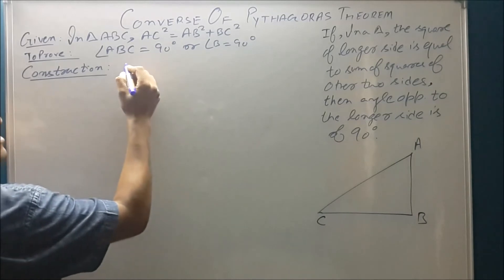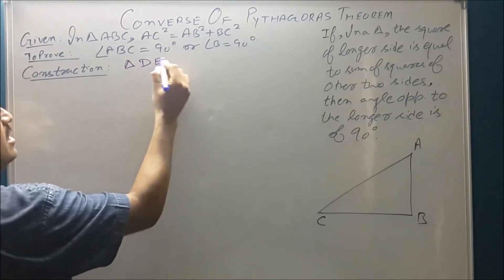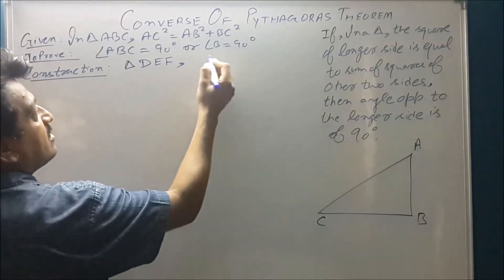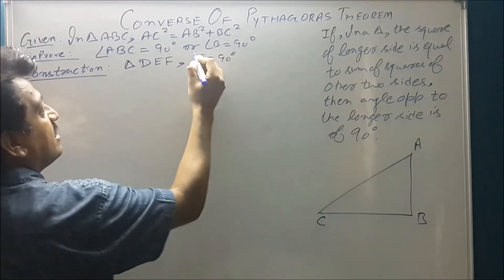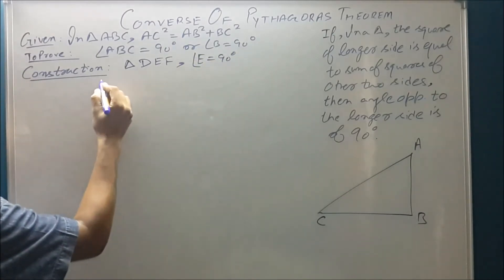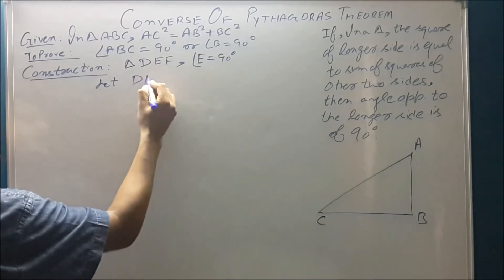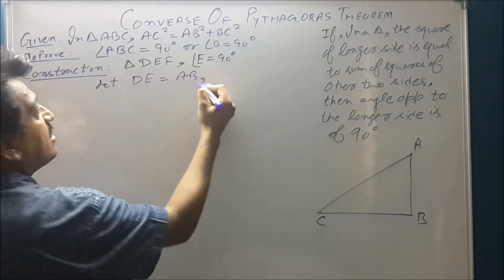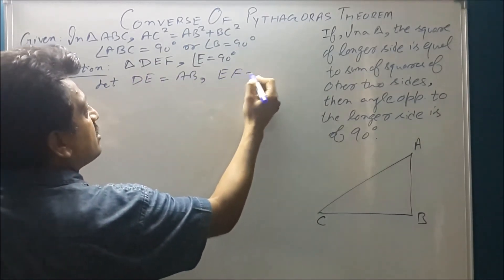We have to do a construction. We have to make a triangle DEF with one angle of 90 degrees, and we have to assume that its side DE is equal to AB and its side EF is equal to BC.